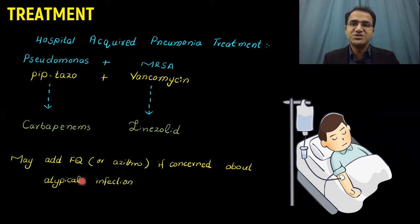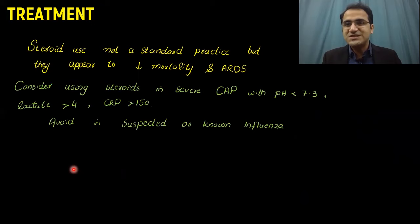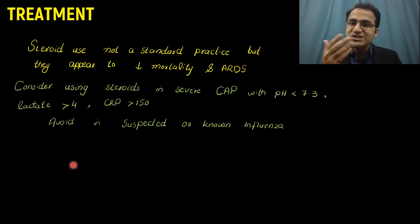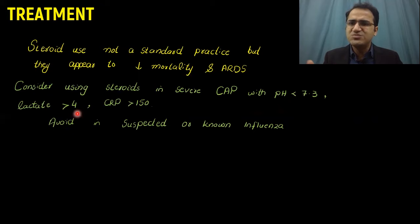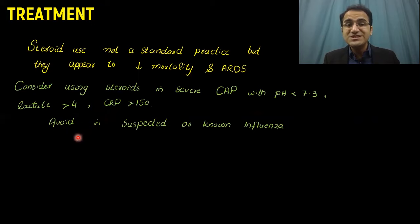Steroid use in pneumonia is not standard practice, but steroids appear to reduce mortality and the risk of respiratory distress syndrome in severe patients. Consider using steroids in severe community-acquired pneumonia where ABGs are trending downward toward an acidotic profile, lactate is building up, CRP is elevated, and the patient is desaturating. Steroids must be avoided in suspected influenza, but can be used in severe community-acquired pneumonia.